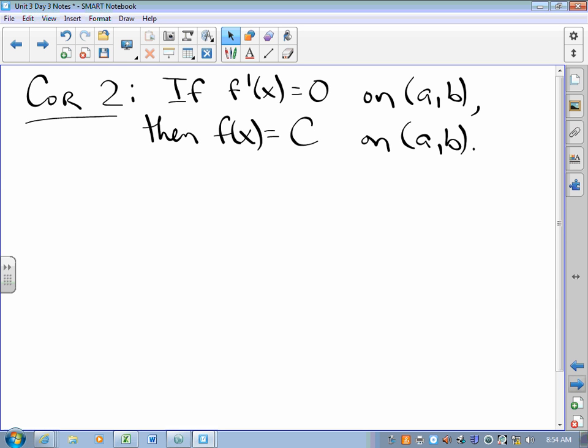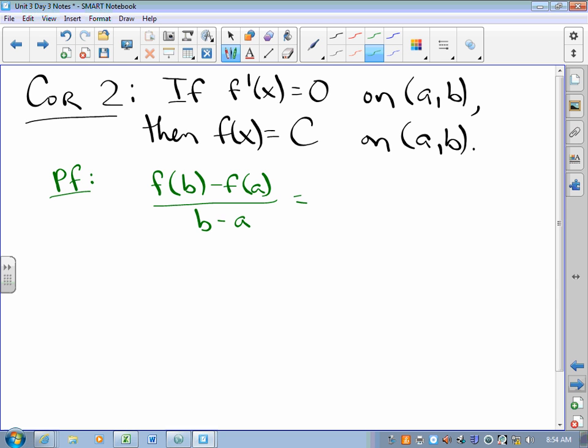If F prime is zero, then the function is a constant. And this comes right out of mean value theorem, because mean value theorem says that if F prime is zero, then F of b minus F of a over b minus a is zero. And if that's the case, we cross multiply, not really, but close enough.